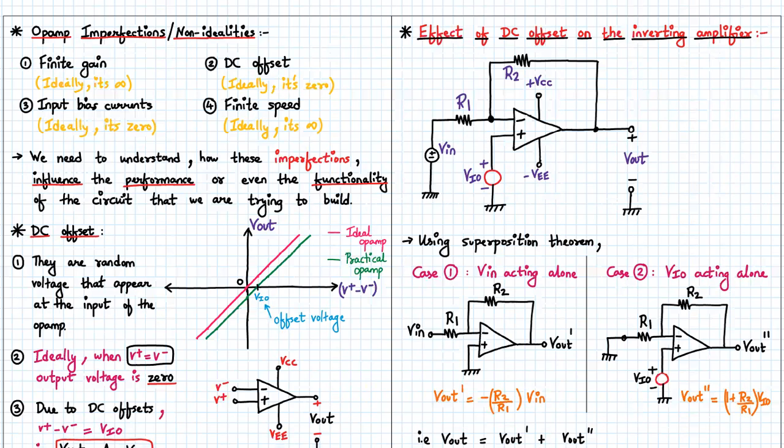But op-amps also have several non-idealities or imperfections. Four of them are mentioned here: finite gain (ideally infinite) and DC offset (ideally zero).